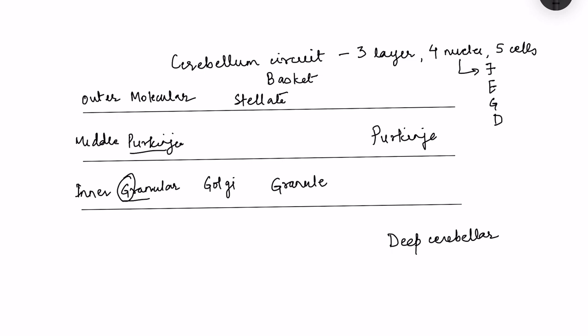Now let us look at the connections in the cerebellar circuit. There are two types of inputs coming into the cerebellum: mossy fibers and climbing fibers. The climbing fibers originate from the inferior olivary nucleus and carry the error signal. All other input comes via the mossy fibers.